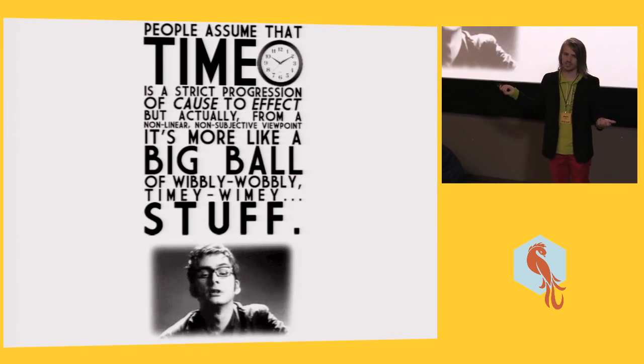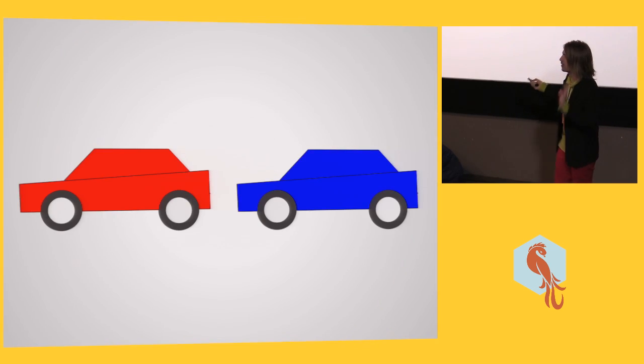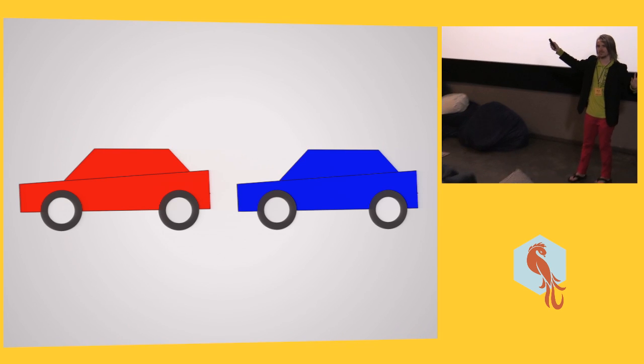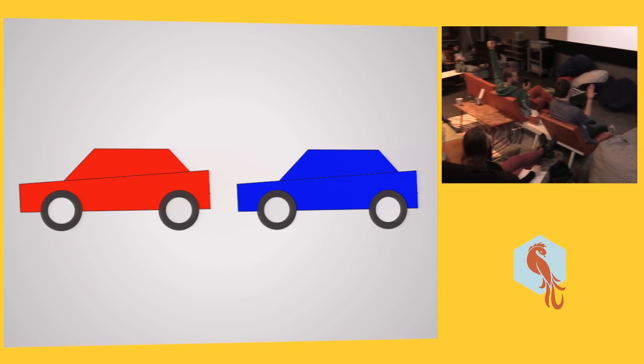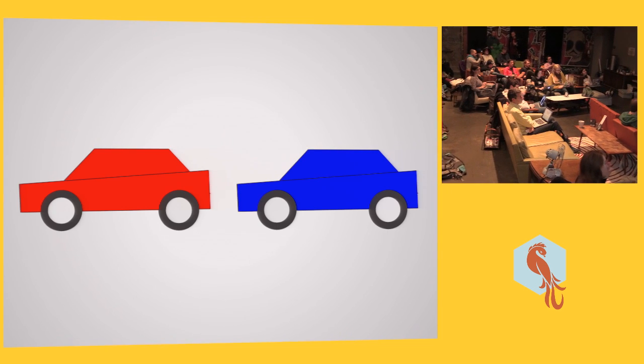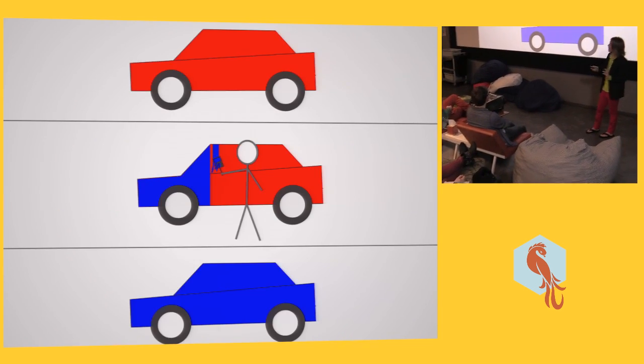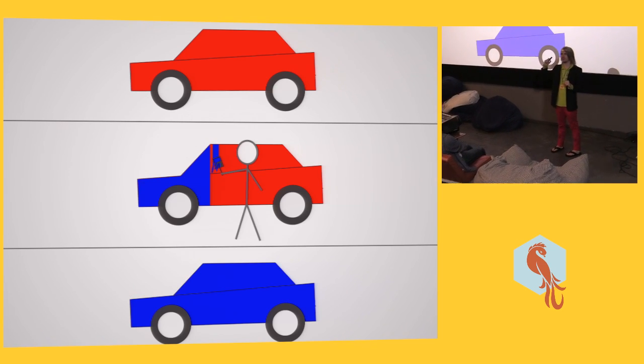So as an illustration, let's go into non-linear time. By raise of hands in the audience, just a very simple question, who would say that these two cars are different? Yeah? Cool. One's blue, one's red, they're different cars, right? But if we reframe this from a time perspective, we get something a little bit interesting.